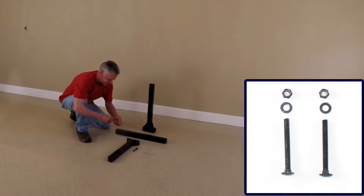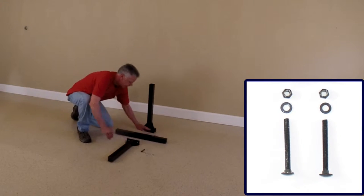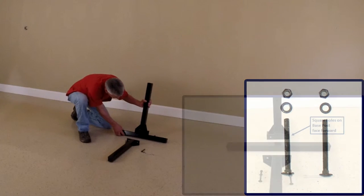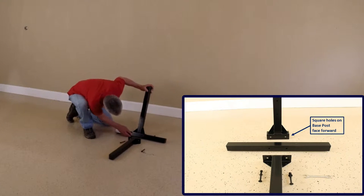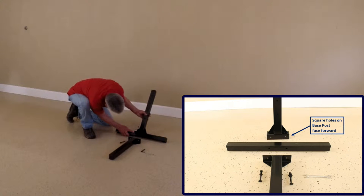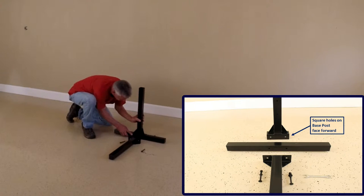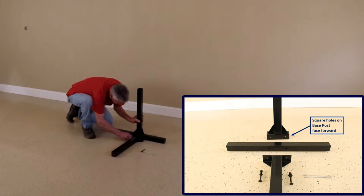Assemble the base using the carriage bolts which have the square lip on their head. Be sure that the square holes on the base post face forward. The welded nuts on the base and the base leg face the floor.